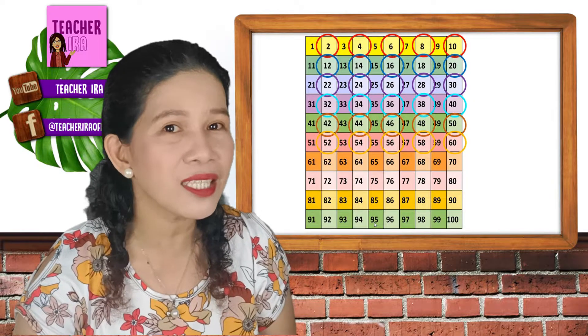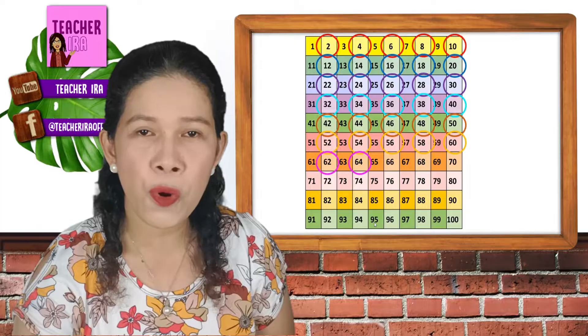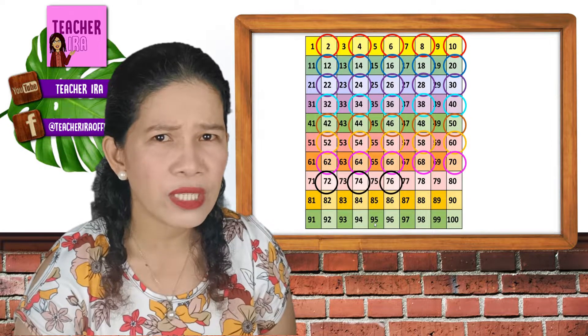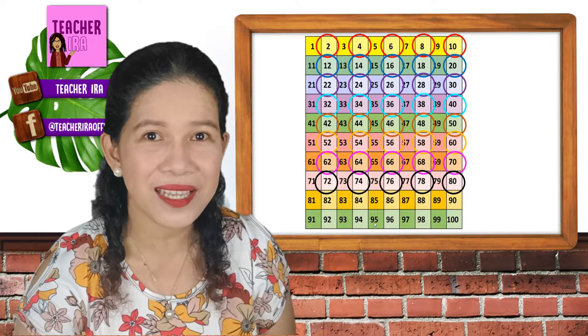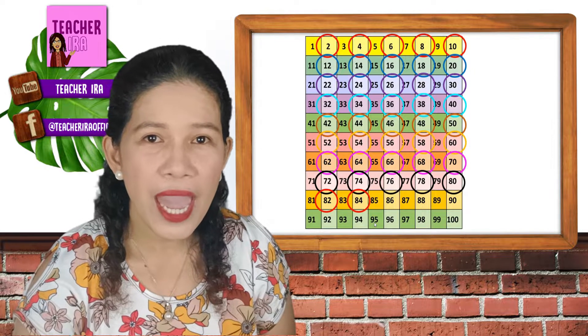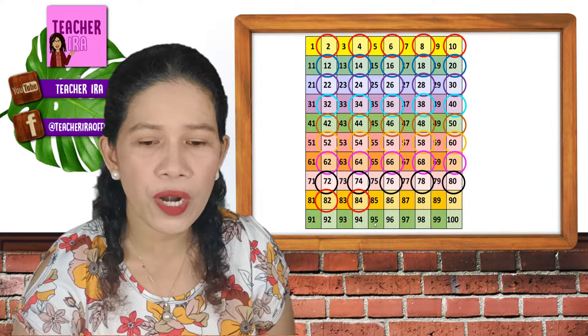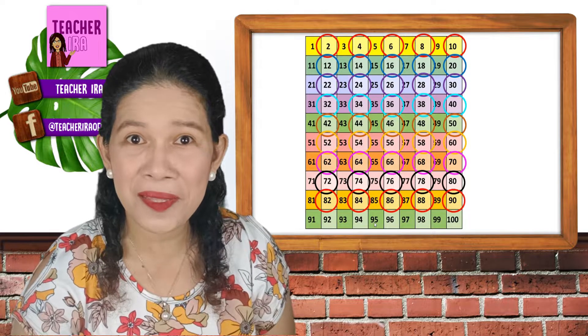It makes our counting faster. Now let's continue. 62, 64, 66, 68, 70, 72, 74, 76, 78, 80, 82, 84, 86, 88, 90.